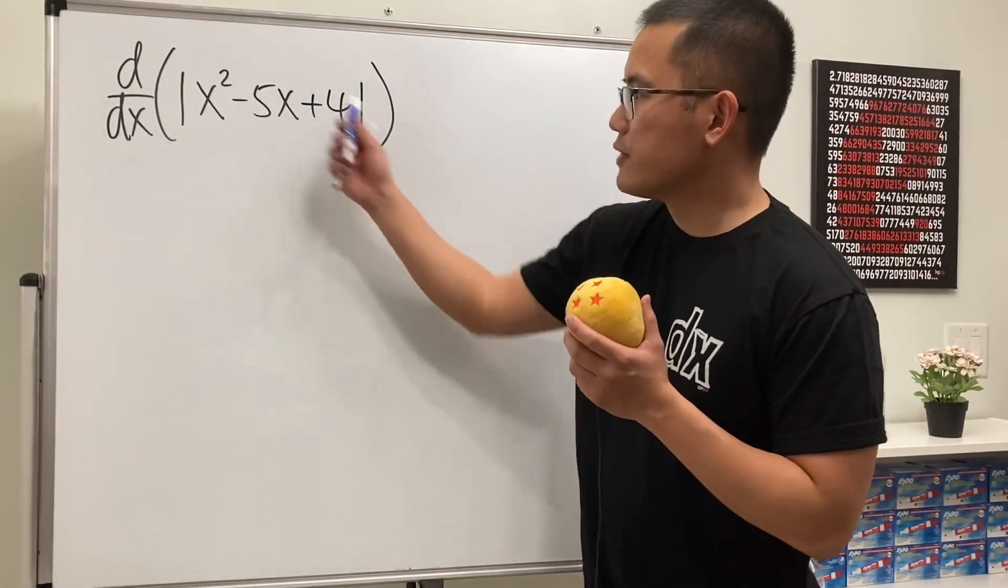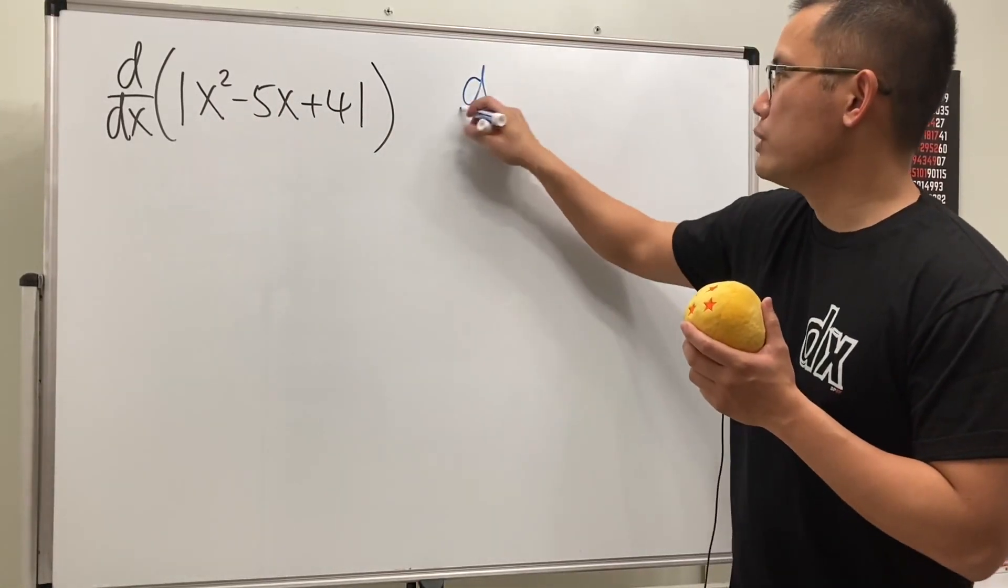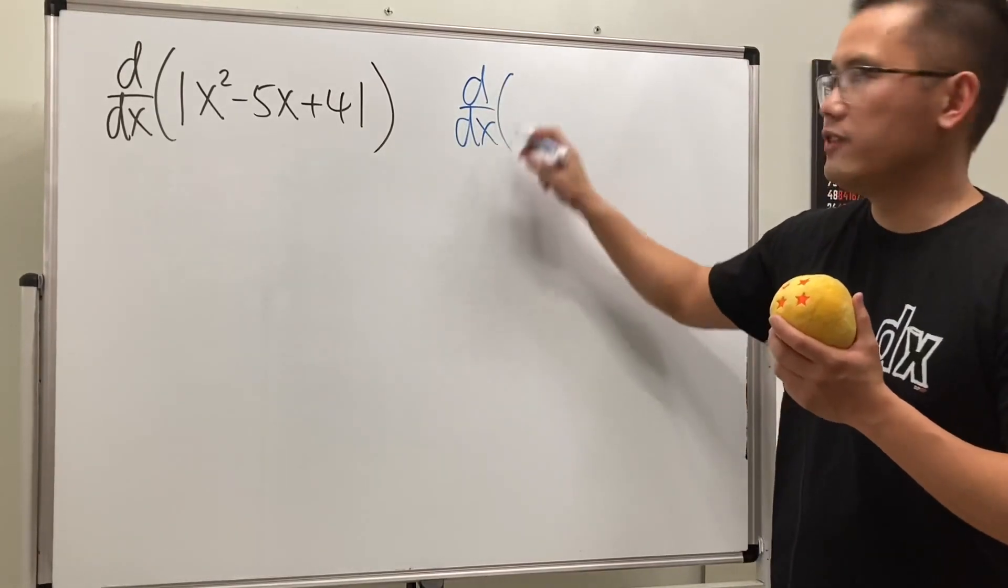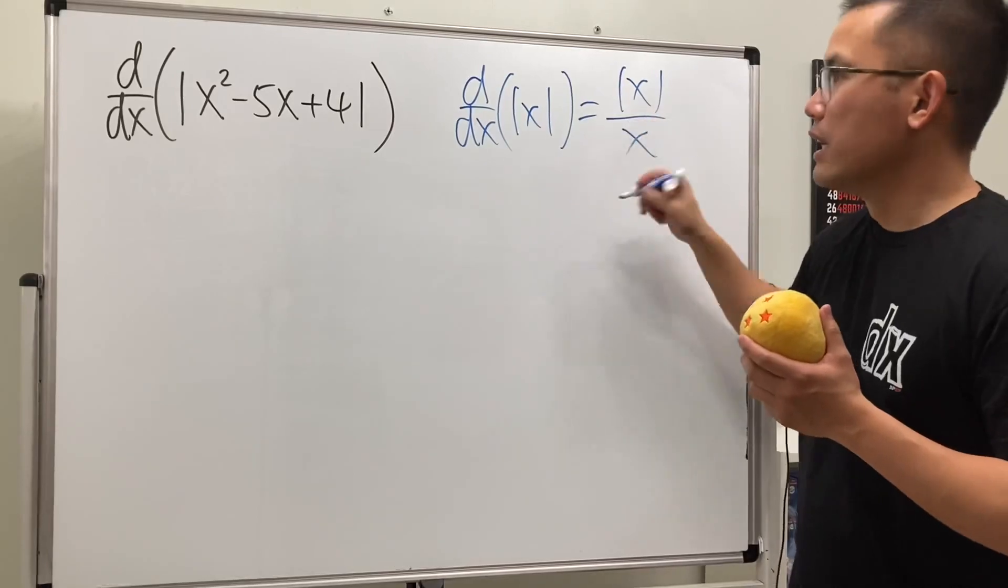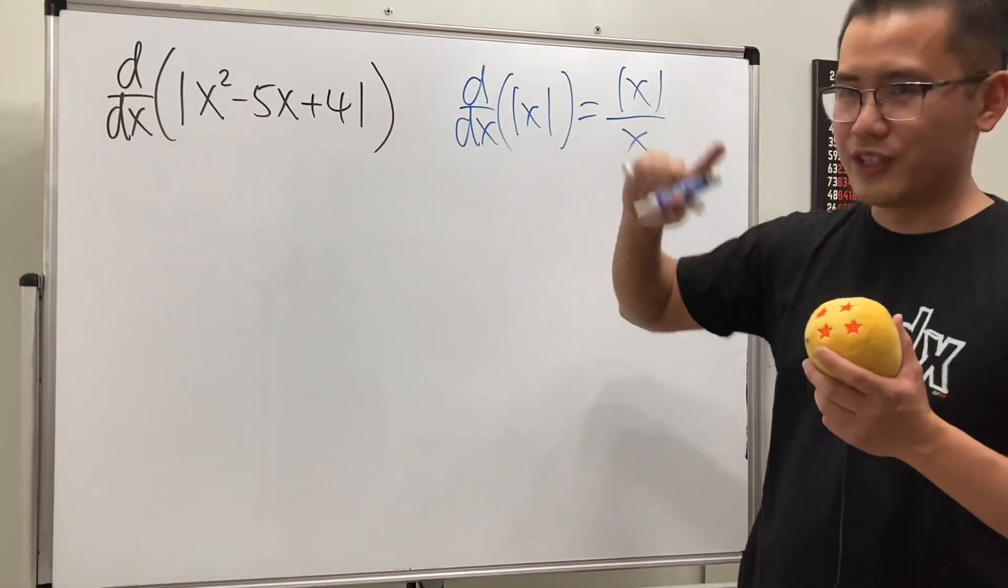Let's see how we can find the derivative of the absolute value of a function. Check this out, let me remind you guys on the side, when we take the derivative of absolute value of x, this is the same as absolute value of x over x. Keep that in mind, I have a video on this already, so check that out.